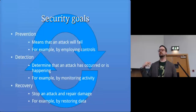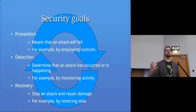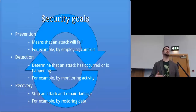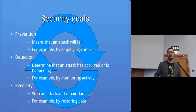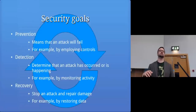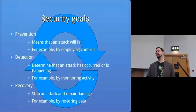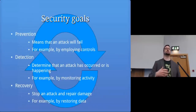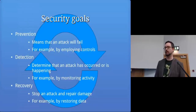We want to be able to determine that an attack either occurred or is currently happening, and that's usually done by monitoring what's happening on the system and checking whether it matches expected behavior. Once we've discovered something's gone wrong, we need to be able to recover — stop the attack, prevent it from getting worse, restore things from backups, and make sure we're back to a secure state.